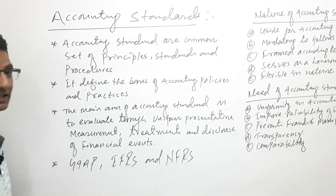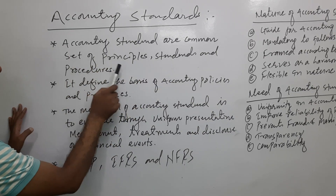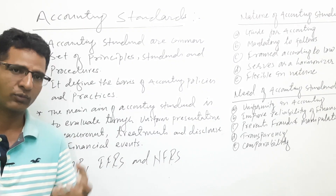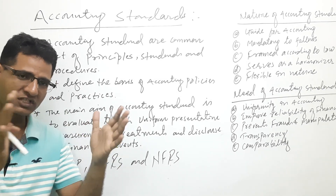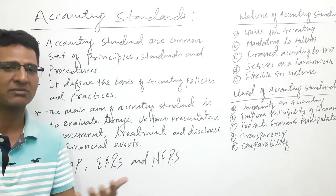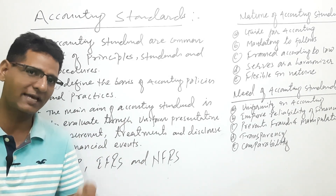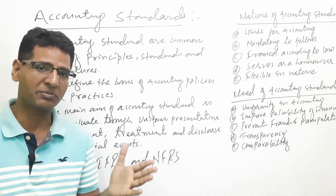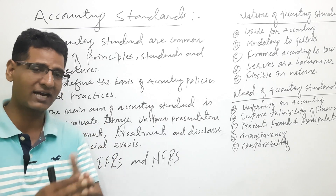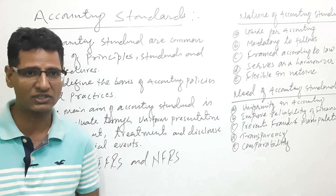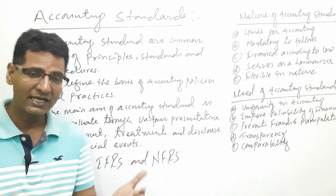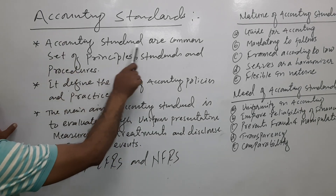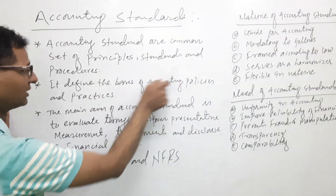Accounting standards are the common set of principles, standards, and procedures. Without a different set of standards, we cannot do anything in accounting. Without different set of standards, there is no equation, no transparency, no measurement. Globally, the entire system follows accounting standards, so accounting standard is very important in the accounting system. Without these accounting standards, we cannot calculate exact data or exact results of the business, and we cannot compare this data between different countries or different companies. Accounting standards are a common set of principles, standards, and procedures.